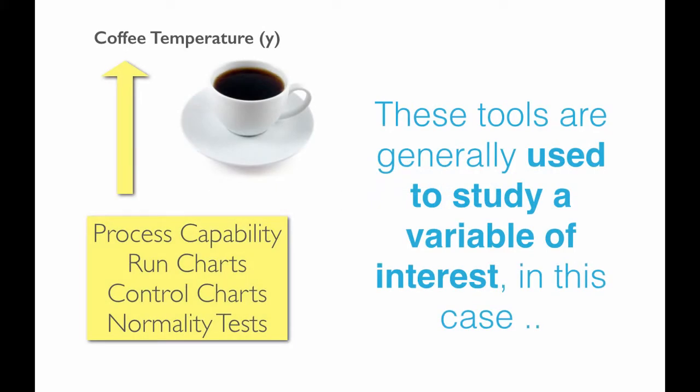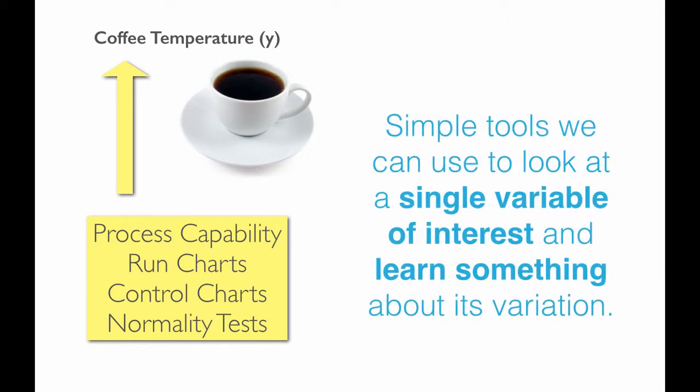So let's start by explaining how these tools work with a look at the Y. The tools listed here — process capability, run charts, control charts, normality tests — are generally used to study a variable of interest, in this case coffee temperature. These simple tools allow us to look at a single variable of interest and learn something about its variation.